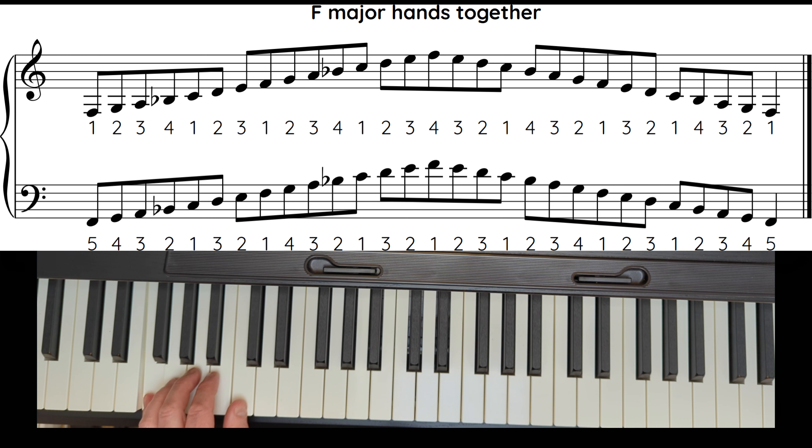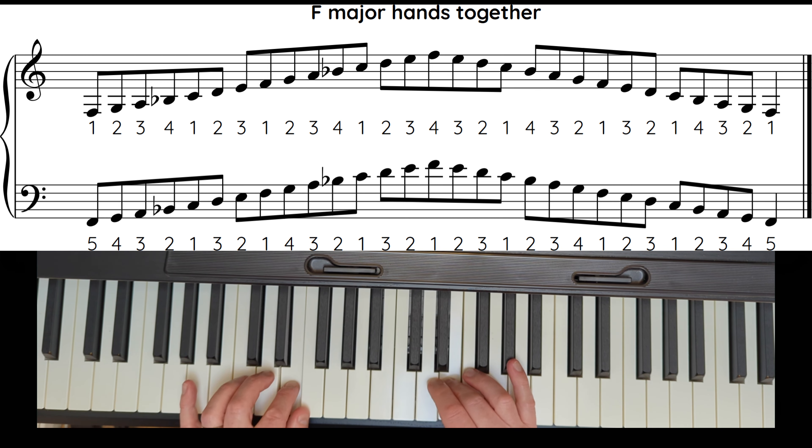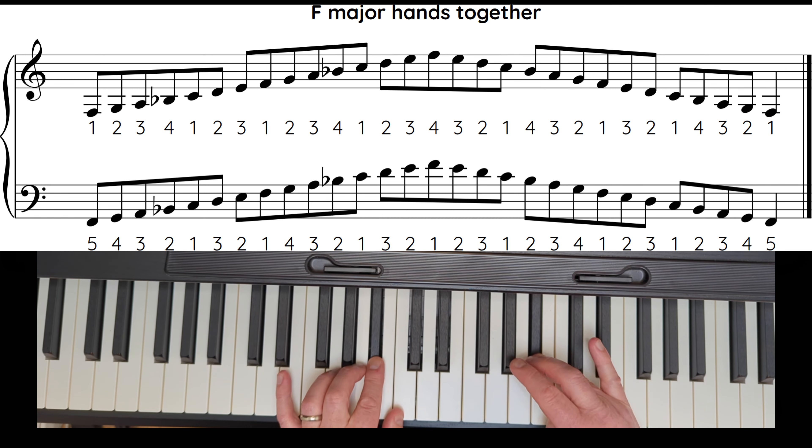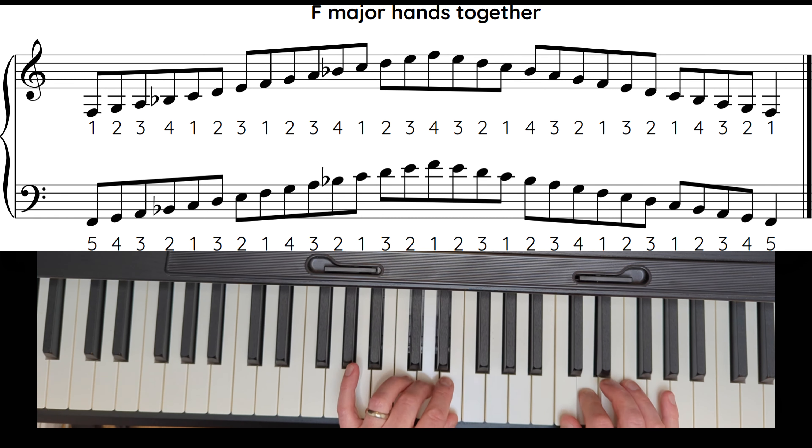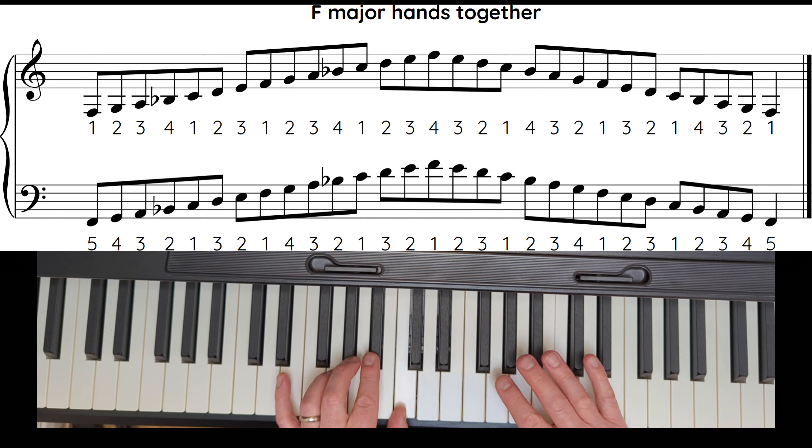And then very slowly hands together for you. Left hand 3 and thumbs together, left hand 4, right hand 4 on a B flat, 3 over, 4 right hand. Thumbs together, right hand 4.